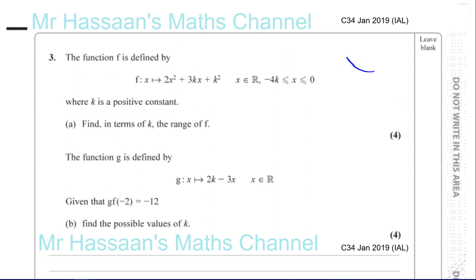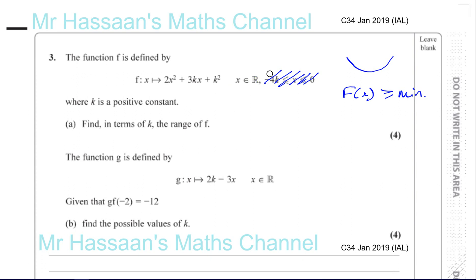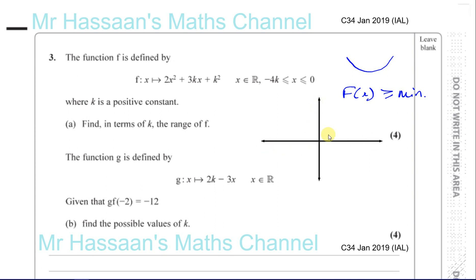The range will have a minimum value. However, there is a condition attached — the domain has a constraint. The domain is restricted between 0 and minus 4k. As k is a positive constant, minus 4k is a negative number. So we're only concerned about this graph between x = minus 4k and x = 0; that's the region we're considering.